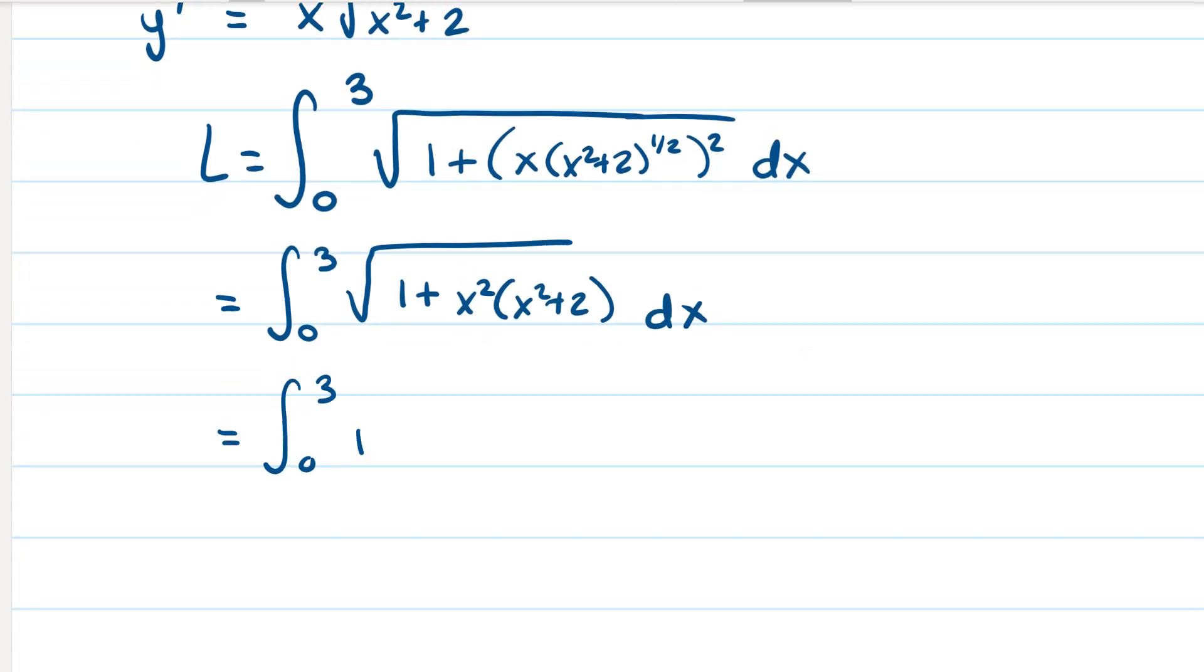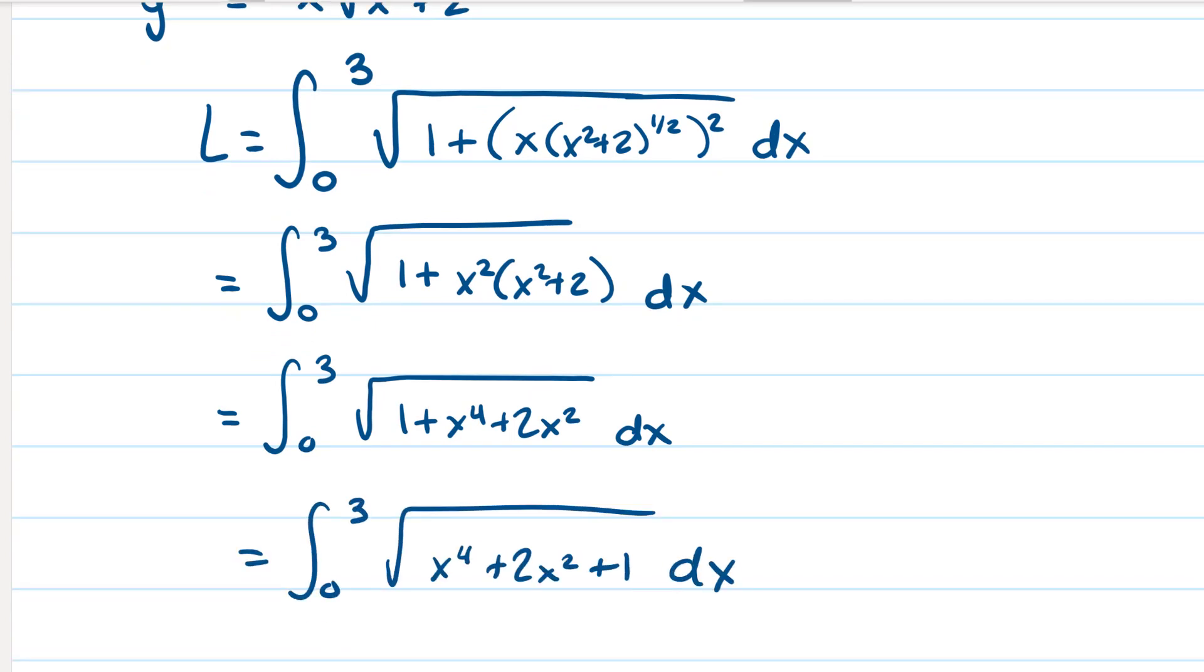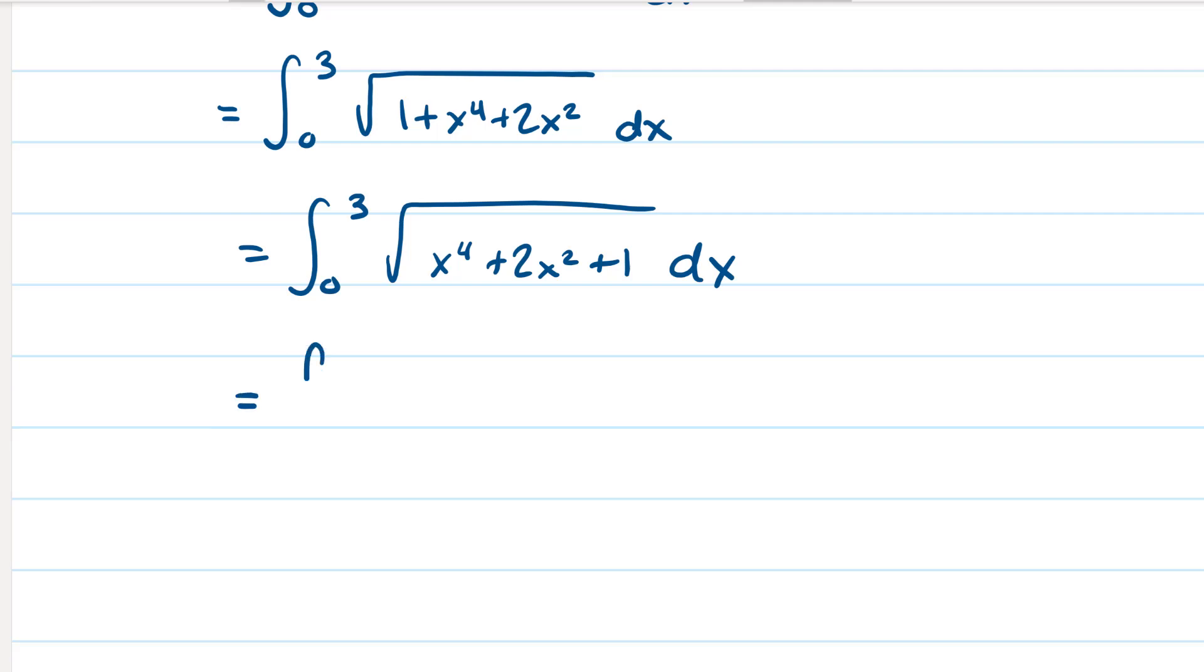So this becomes the integral from 0 to 3. Distribute in the x squared, and then we're going to rewrite it in the right order. And this is where your algebra 2 skills come in handy. We're going to factor it, and we're going to get x squared plus 1 squared.